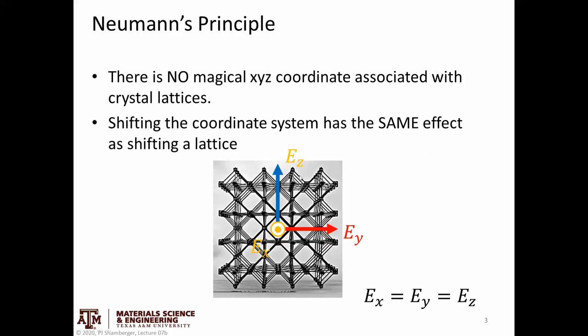And again, the way to think about it is that a lattice doesn't have a magical XYZ coordinate. There's no little vector coordinate system that's hidden inside of each and every crystal that tells you this way is the X direction, this way is the Y, this way is the Z. Basically, we have to define that.